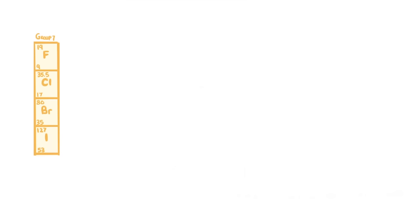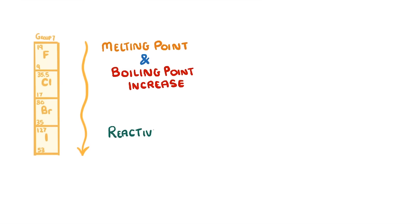Just like the Group 1 elements, Group 7 also has trends as you go down the group, but they're the opposite way around. So for halogens, the melting points and boiling points increase as you go down the group, and the reactivity decreases.